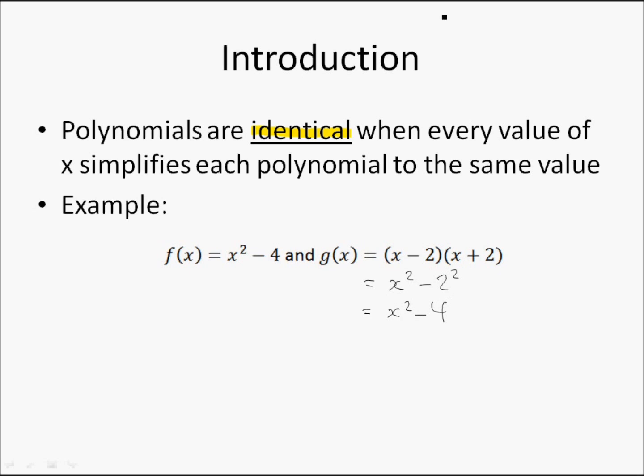The rule I'm using here is (a - b)(a + b) = a² - b². This is a special algebraic property which you have learned earlier in your mathematics syllabus. If we compare f(x) and g(x) now, you will see that they are the same, and therefore we can say that the two polynomials are identical.